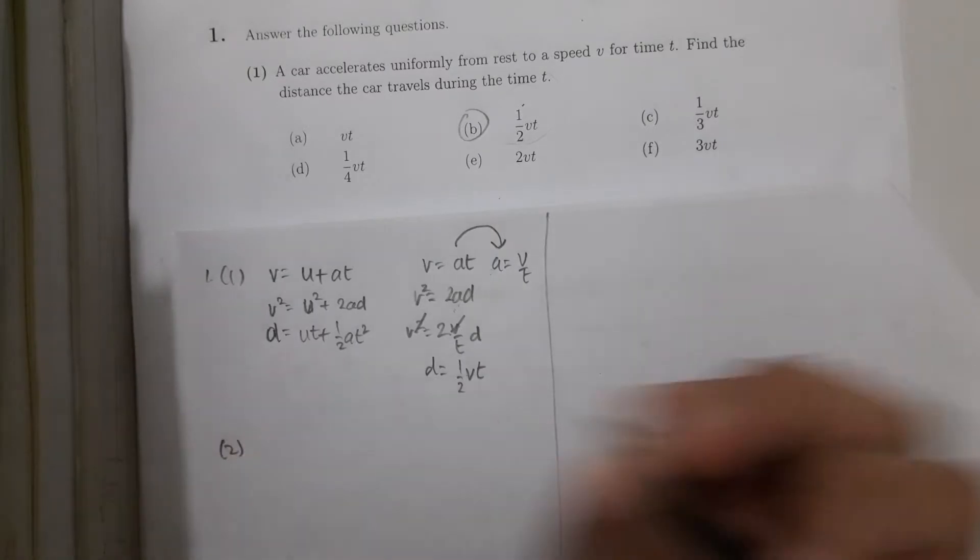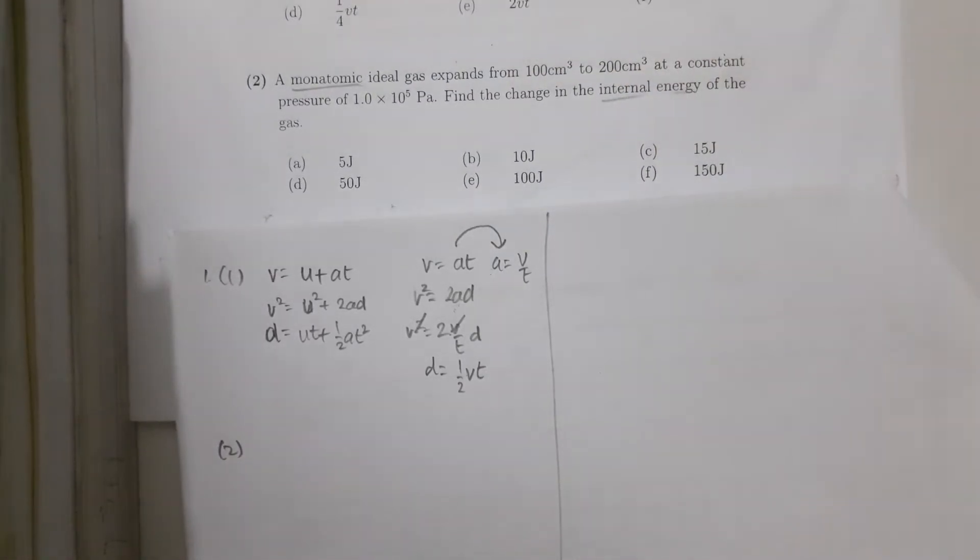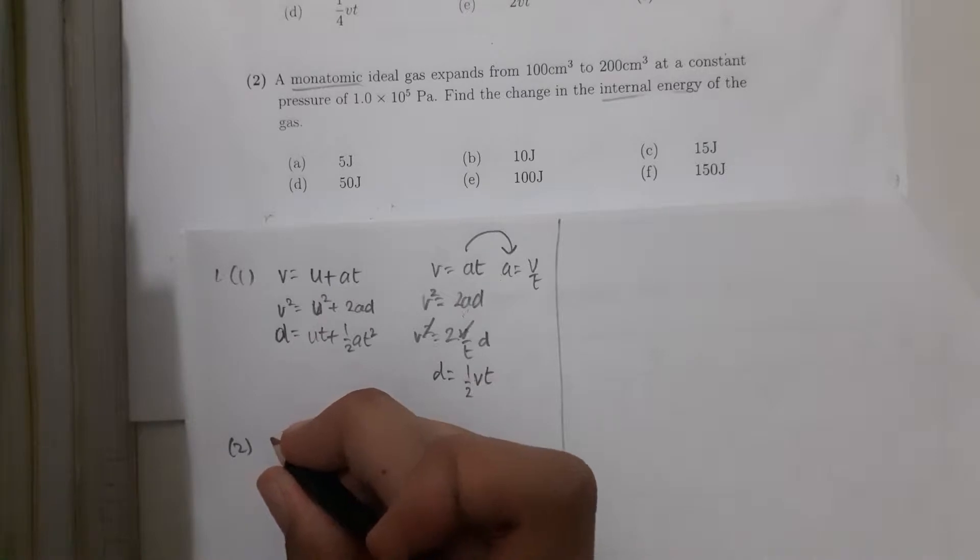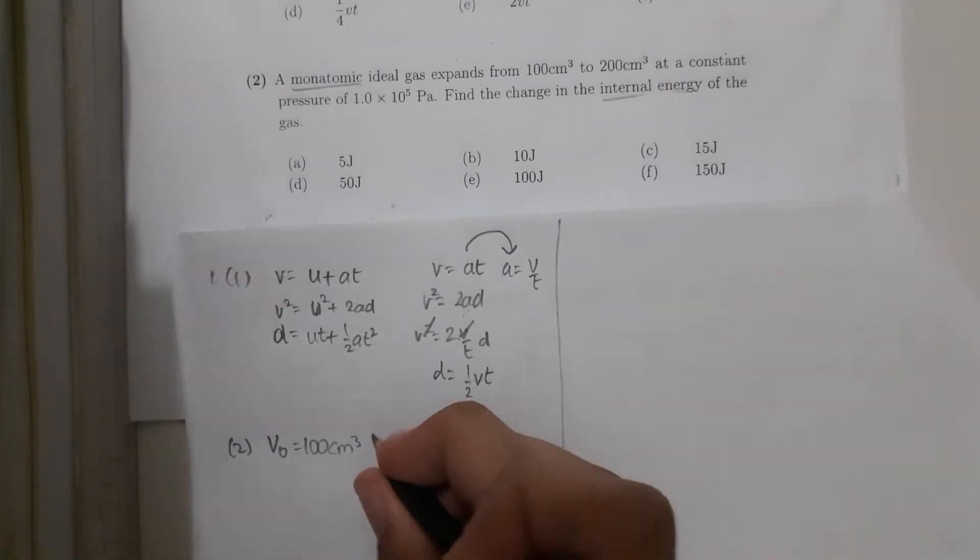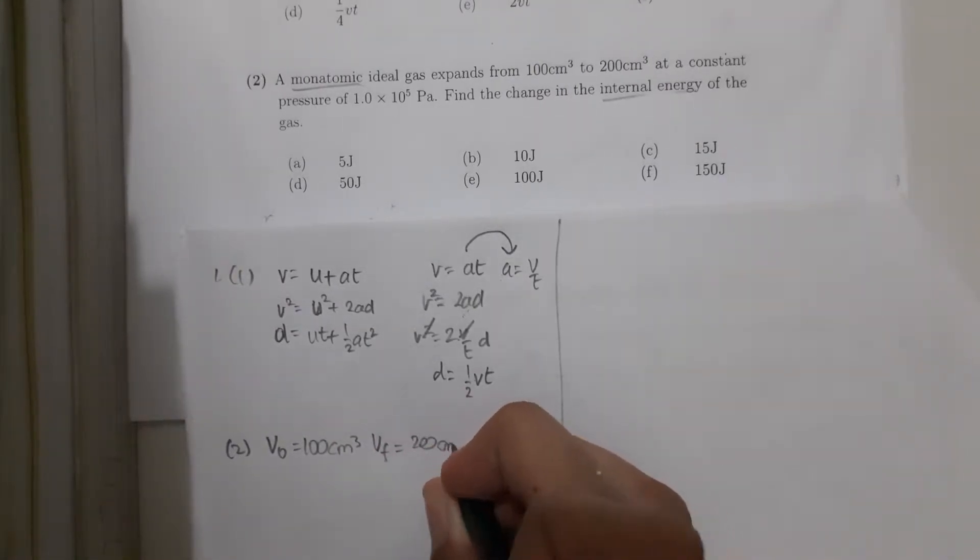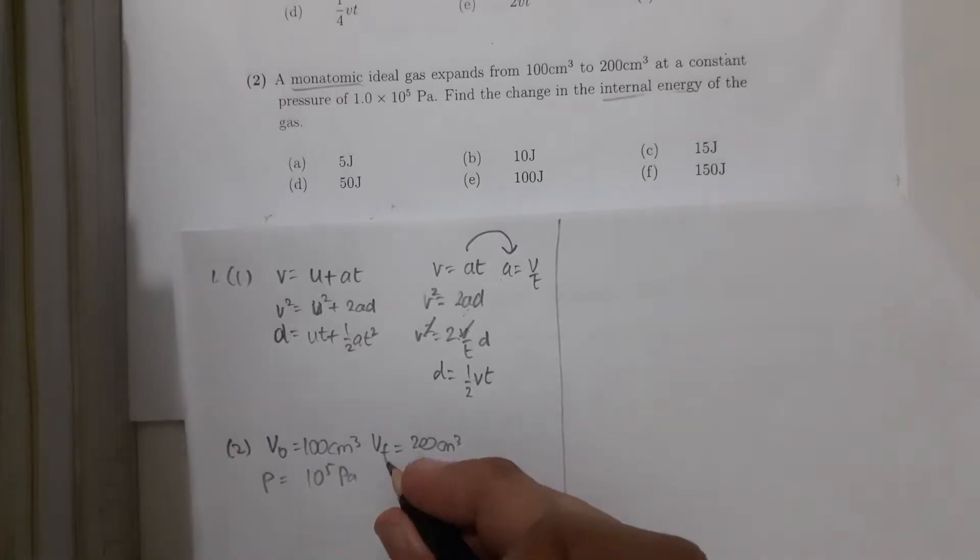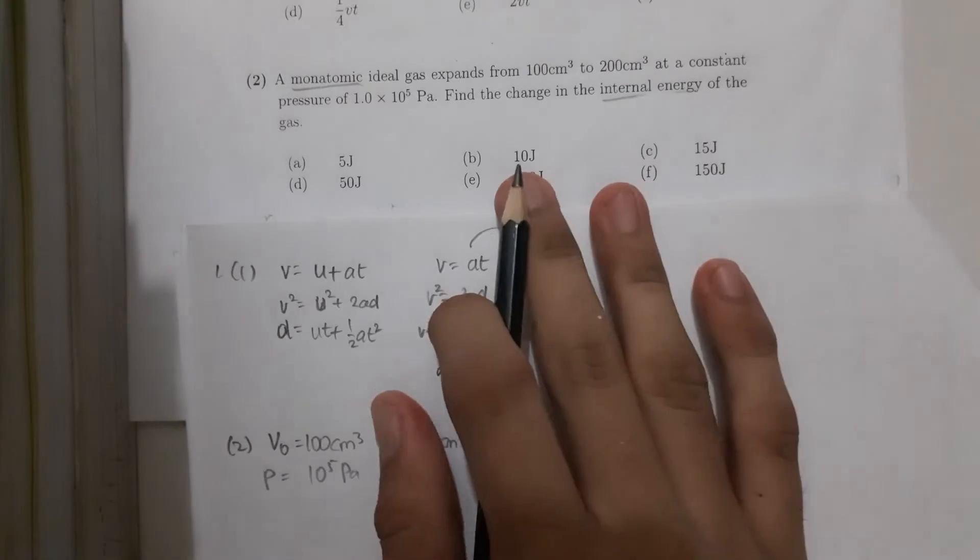Now let's go to the second question. A monoatomic ideal gas expands from 100 cm³ to 200 cm³ at a constant pressure of 10 to the power of 5 pascal. Find the change in the internal energy of the gas. So if it expands, then the initial v is 100 cm³ and v final is 200 cm³ at a constant pressure of 10 to the power of 5 pascal. We are asked to find the internal energy. And remember, for monoatomic gas, u is 3 over 2, p delta v.